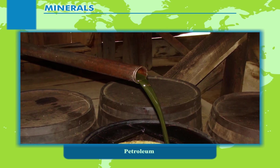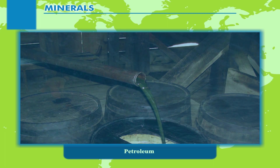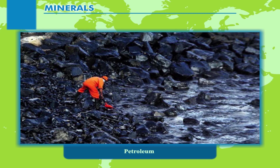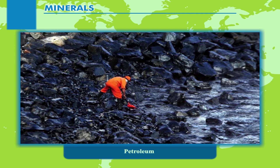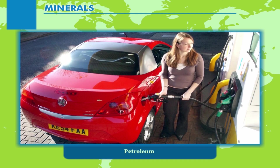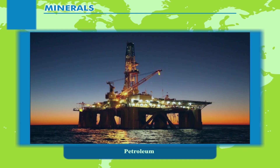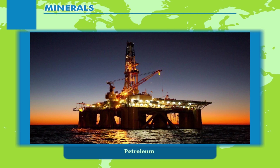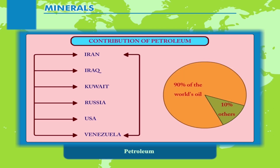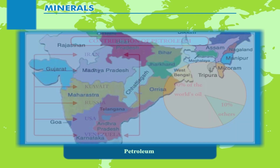Petroleum is a greenish or brownish coloured liquid found in porous sedimentary rocks in the earth. In modern times, petroleum has emerged as the most important source of energy. It is used in driving automobiles. Most of the oil reserves are located in offshore areas. The major producers are Iran, Iraq, Kuwait, Russia, USA, and Venezuela. These countries supply over 90% of the world's oil.